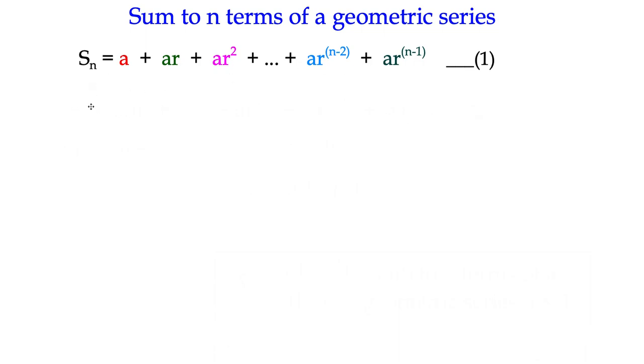What we're going to do is multiply both sides of that equation by r, the common ratio. So we've got rS, the r times the sum, and on the right-hand side, all our terms, we've increased, we've multiplied through by r.